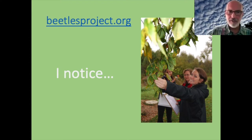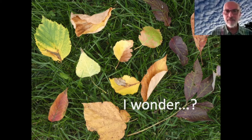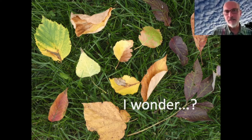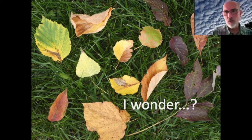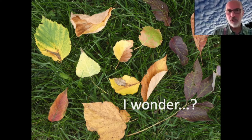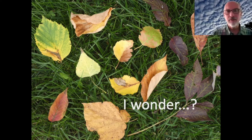Having shared some of the things they've noticed, they're then asked to talk to their partner and start their sentences with the word 'I wonder.' So they might wonder what's been eating their leaf, or what caused a black spot on their leaf, or why leaves change colour during fall, or why leaves fall off trees in the fall. They can do any sort of wondering that they like, followed by a short group discussion around what things they wondered about their leaf.